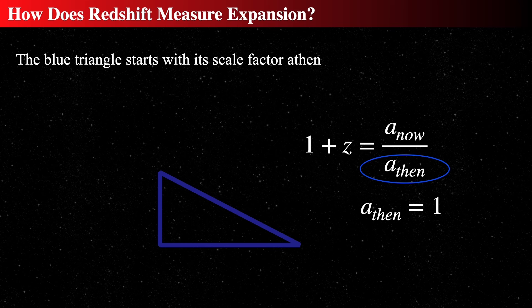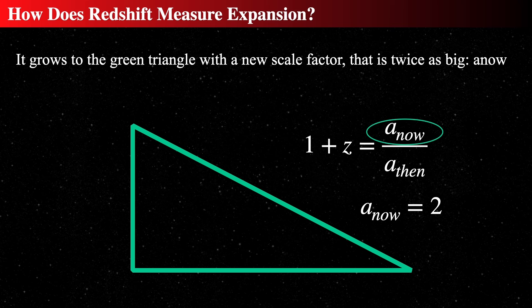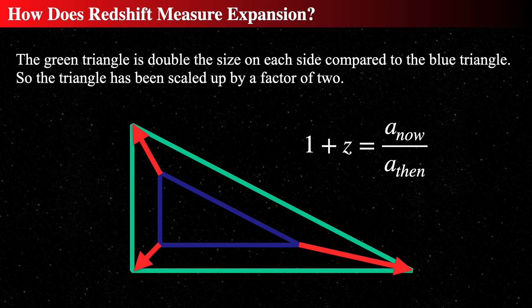How does redshift measure the expansion? The definition of redshift: imagine small galaxies at each point of a triangle. The scale factor ago was, say, one. Then we expand the triangle, doubling its size, so the scale factor now is two. All of the points have separated from each other — every length has doubled. It hasn't expanded from a place; the distance of each side has gotten bigger by a factor of two. This is what we define to be the redshift.